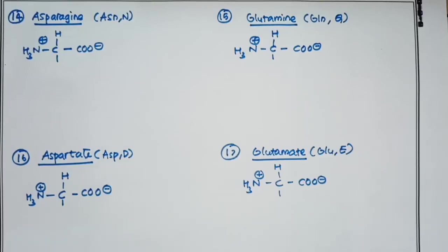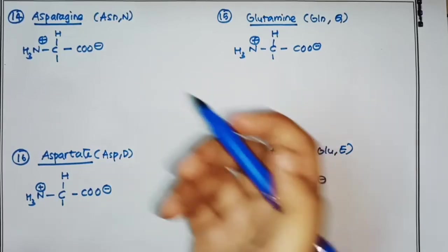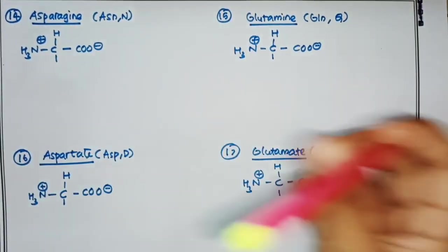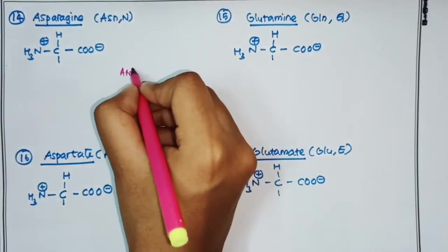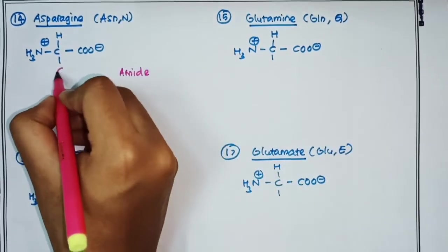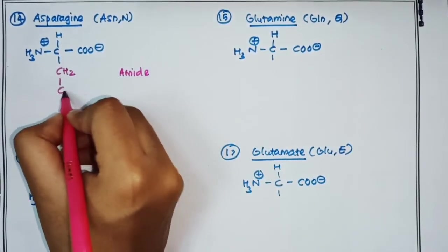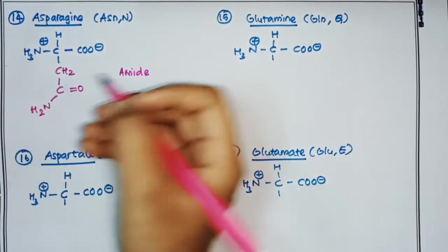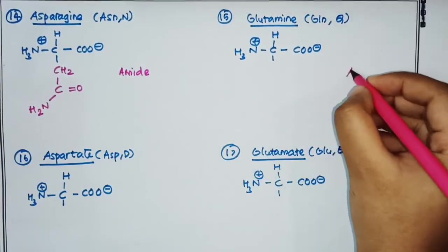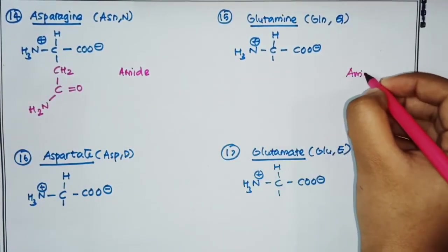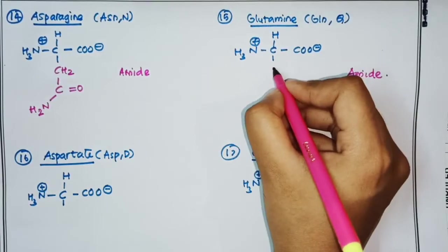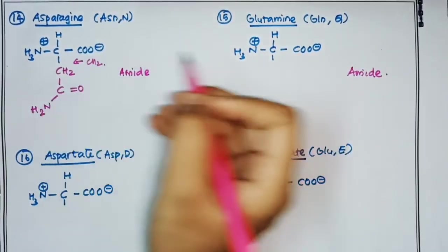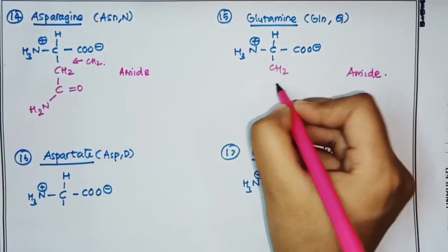The fourteenth amino acid is asparagine, where the R group is an amide: –CH₂–C(=O)–NH₂. Glutamine also has an amide R group; you just insert an additional –CH₂– into asparagine's R group to get glutamine.